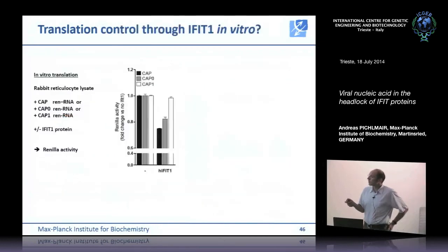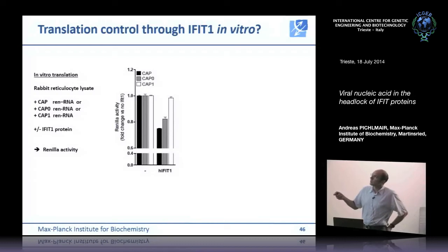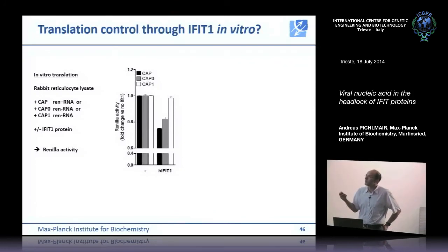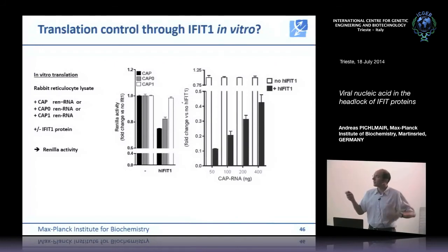We confirmed this in vitro using recombinant IFIT protein measuring translation rates of Renilla RNA with different 5' modifications. Unmethylated or N7-methylated-only RNAs were inhibited by the addition of IFIT proteins, whereas fully methylated RNA translated normally, suggesting IFIT proteins directly bind 5' unmethylated RNA and inhibit its translation in vitro. This is a stoichiometric effect: increasing the amount of capped RNA template alleviates the effect of IFIT1, suggesting a stoichiometric interaction between IFIT protein and the RNA template.